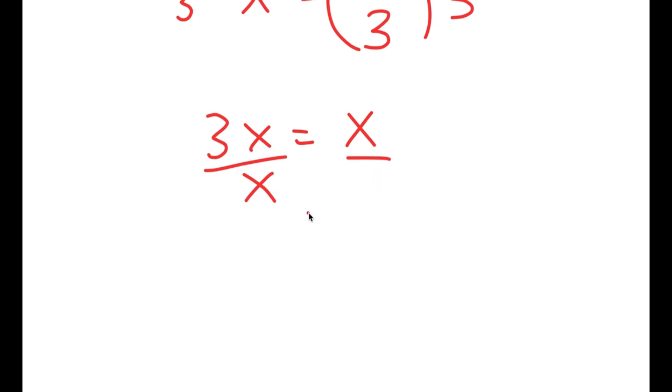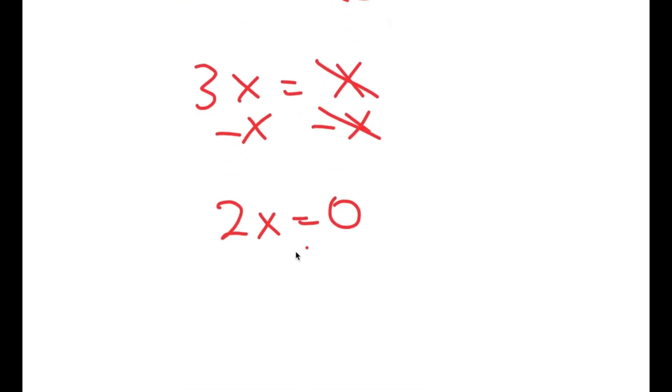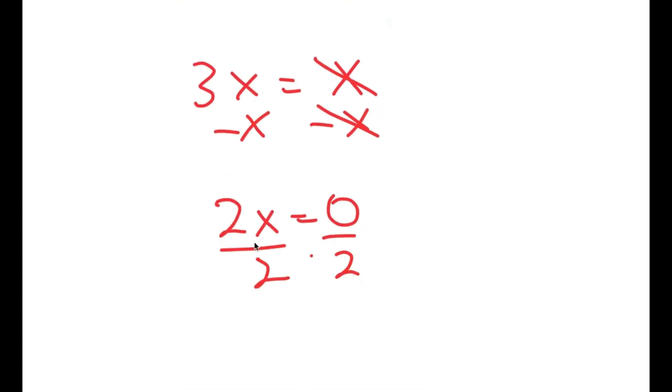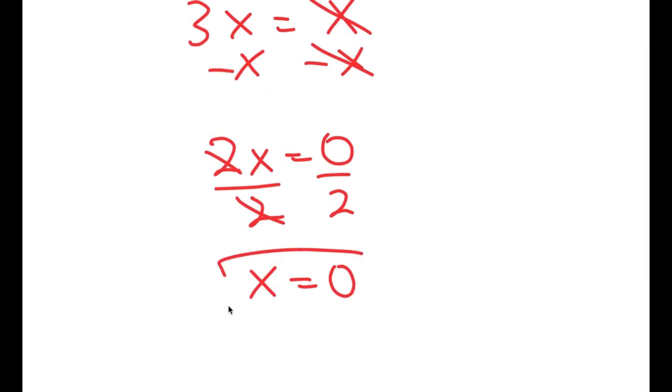So instead, what you should do is subtract x on both sides. So you get 3x minus x, which is 2x, is equal to 0, meaning x is equal to 0 divided by 2, which is 0.